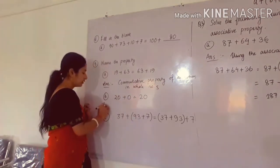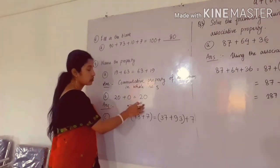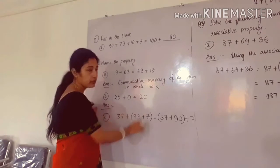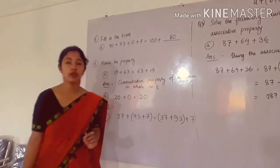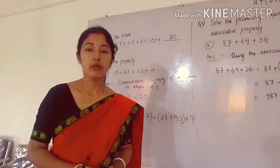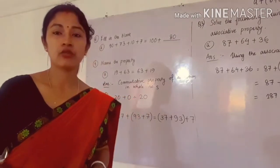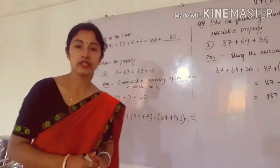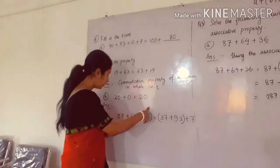Similarly, in question number B, this is written 20 plus 0 is equal to 20. Whenever we add 0 to any whole number, we will get the same whole number again. This property is called additive identity in whole numbers, so you have to write additive identity.